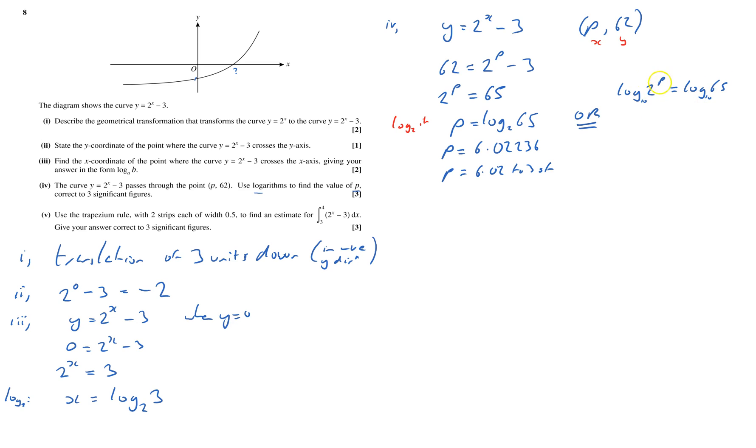But if my calculator doesn't do that, then I'm going to have to do log both sides. I get log of 2 to the p equals log of 65. And this is to base 10 because my calculator will do that. The p comes down to the front. So p times log to the base 10 of 2 equals log to base 10 of 65. Divided by log to base 10 of 2. And that obviously equals 6.02, the same value. So either of those ways.